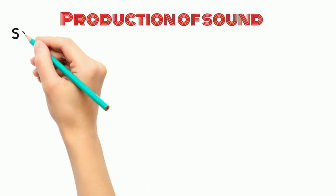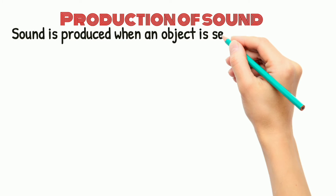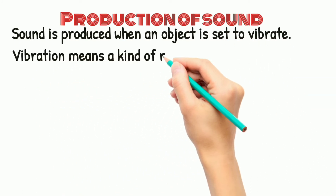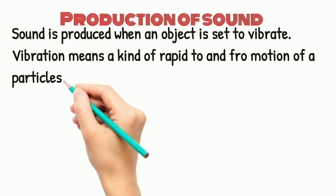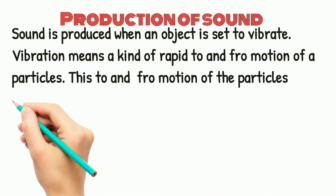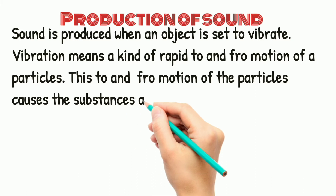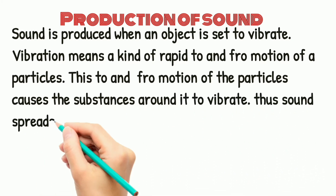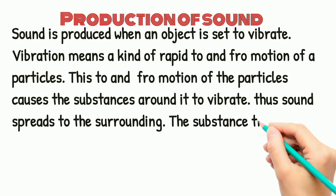Sound is produced when an object is said to vibrate. Vibration means a kind of rapid to-and-fro motion of a particle. This to-and-fro motion of a particle causes the substance around it to vibrate. Thus, sound spreads to the surrounding. The substance through which sound is transmitted is called a medium. Sound moves through a medium from a point of generation to the listener. This confirms that sound is produced by vibrating particles.